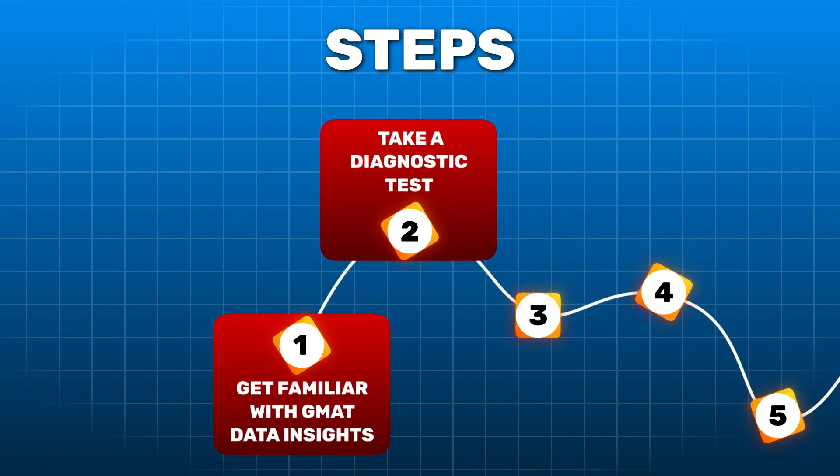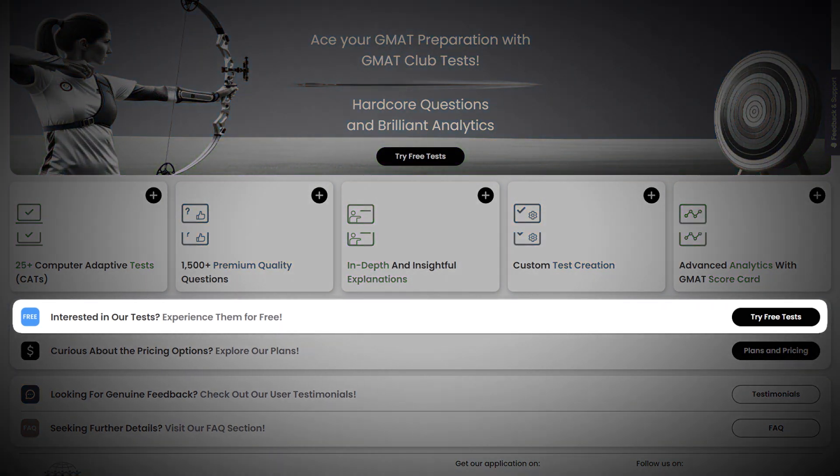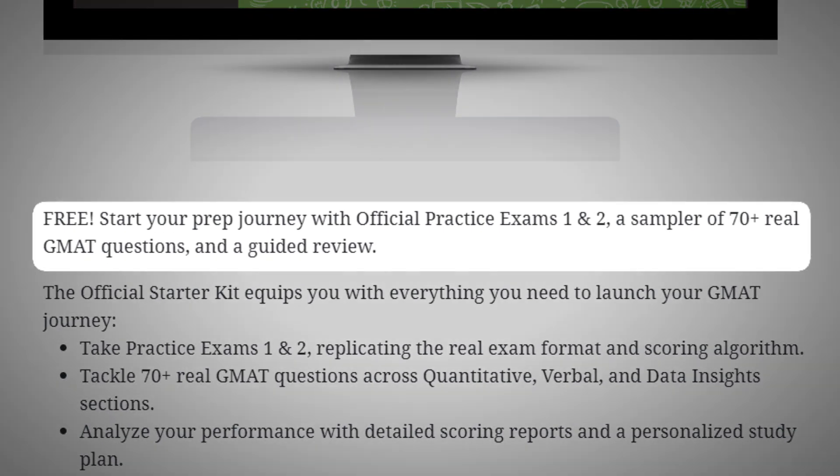Step 2: Take a diagnostic test. This will be the true reflection of your preparation and will help in setting a baseline score, which will decide how you have to move forward. Head over to GMAT Club and take one of their free practice tests, or you can also use the free tests provided by MBA.com. When you take this test, try to simulate real test conditions — find a quiet space and resist the urge to Google anything.